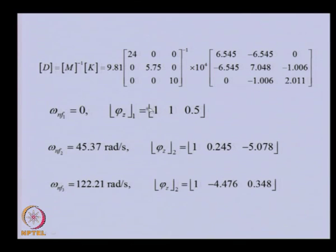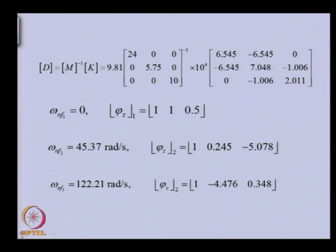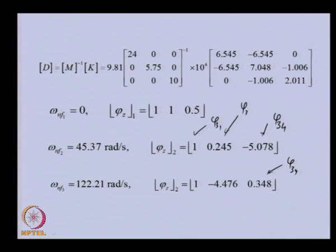The eigenvalues give the natural frequencies and eigenvectors give the relative displacements at various nodes. The first natural frequency is the rigid body mode where nodes 1 and 2 have the same displacement; node 4 has half the displacement due to the gear ratio. We have 3 natural frequencies: two flexible modes and one rigid body mode. The phi_z3 displacement can be recovered by dividing the phi_z2 result by the gear ratio. Now we will take up another example for the branch system — the same gear element equation can be used for analyzing branch systems.